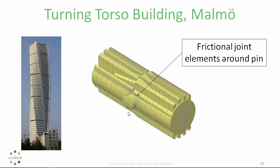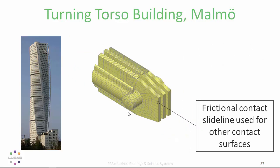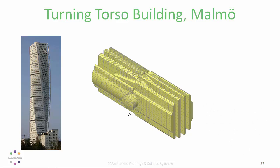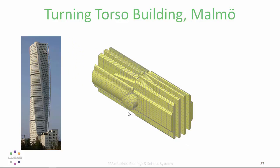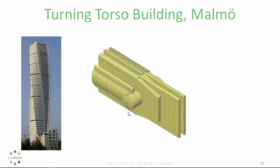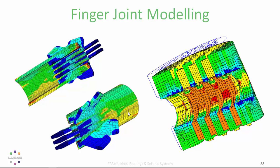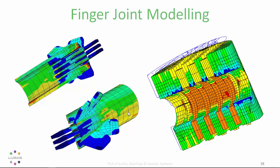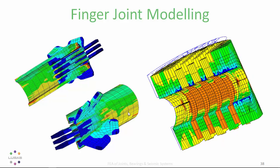This isn't something you could reasonably model with joint elements, so it requires a contact algorithm to detect which elements are transferring stress in potentially highly non-linear and dynamic situations. In a local model of a pin joint in the Turning Torso building in Sweden, frictional joint elements were used around the pin, while many other contact surfaces were included using contact slide lines. Most of the local model is built with 3D continuum or solid elements.